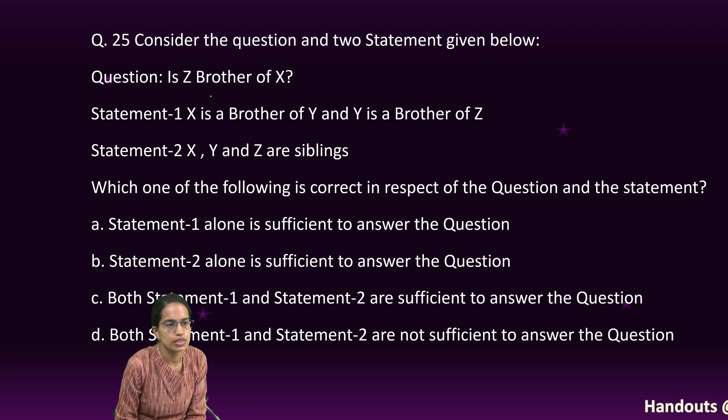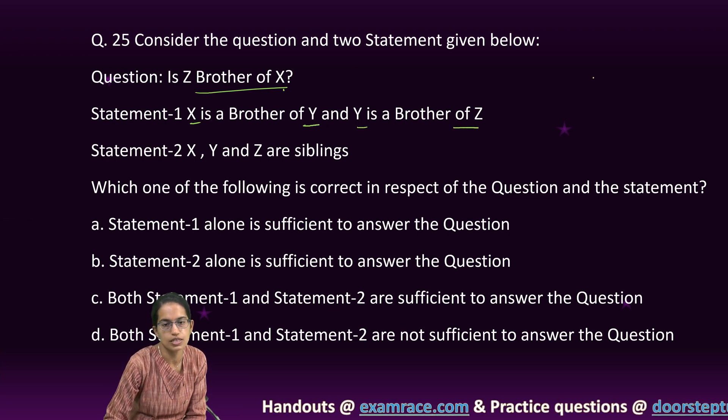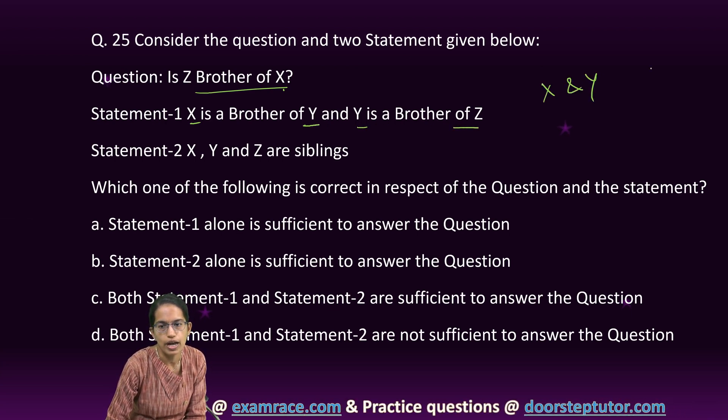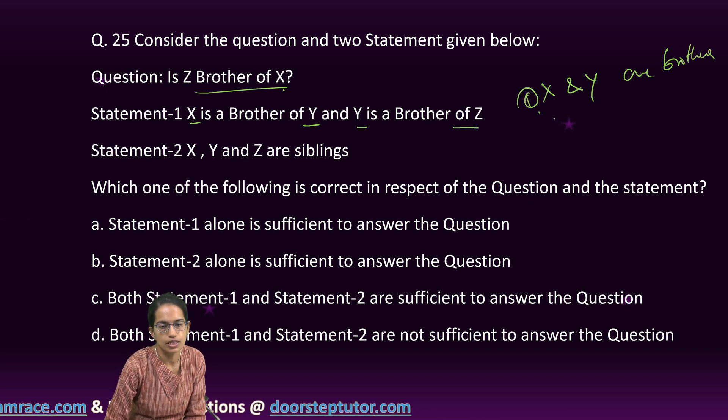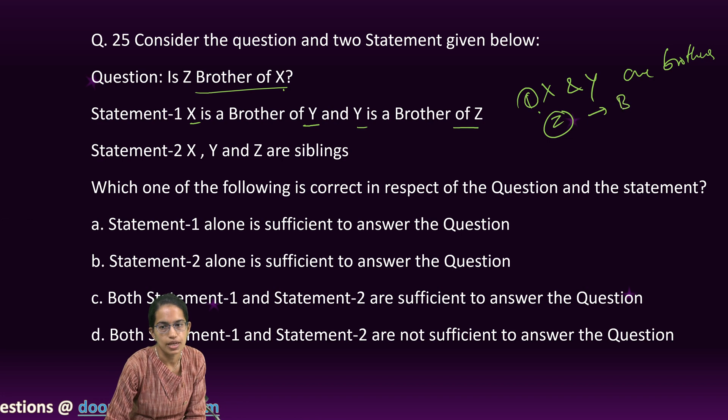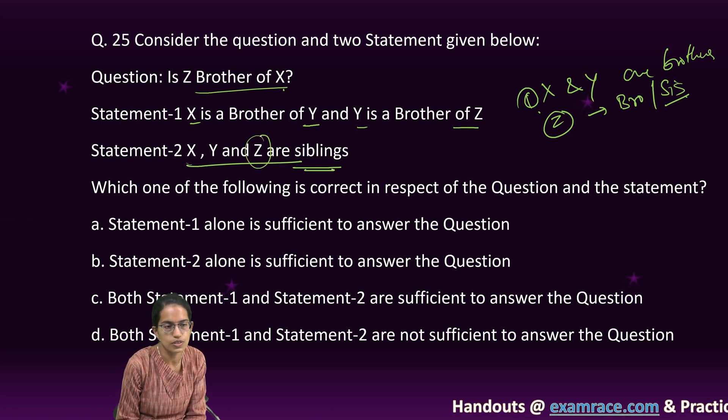The first question says Z is a brother of X. The statement says X is a brother of Y, Y is a brother of Z. That means X and Y are brothers, that's for sure. We do not know Z. Z can be brother or Z can be sister. X, Y, Z are siblings. So we know they are brothers and sisters but we do not know the gender of Z from here.